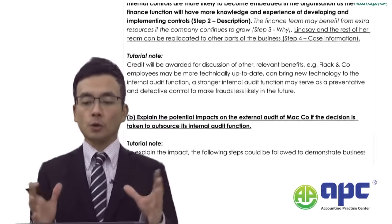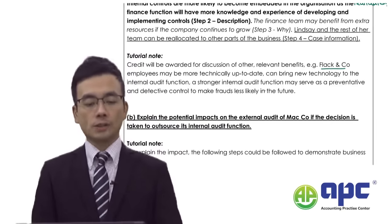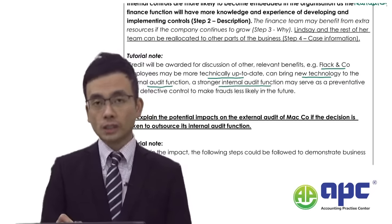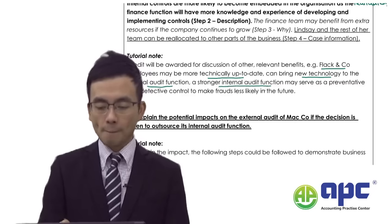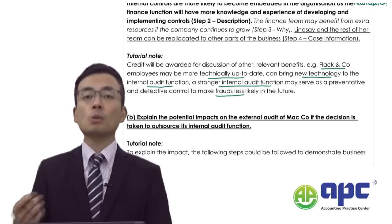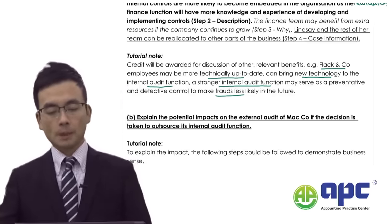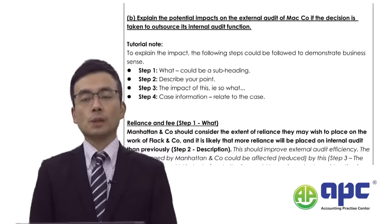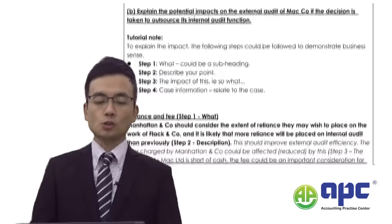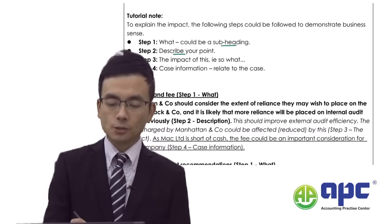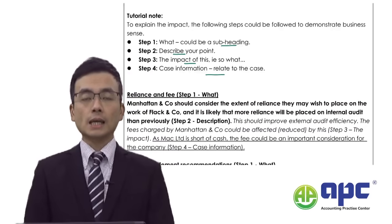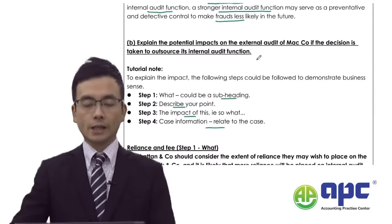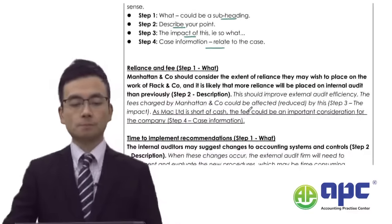According to the tutorial notes, additional points include that Flack & Co employees may be more technically up to date, bringing new technology to the internal audit function, forming a stronger department and making fraud less likely. Moving to Part B - explaining the potential impact on the external auditor. Manhattan & Co is the external auditor. We'll include four steps here: subheading, description of the point, the impact, and case information - a similar approach to Part A.